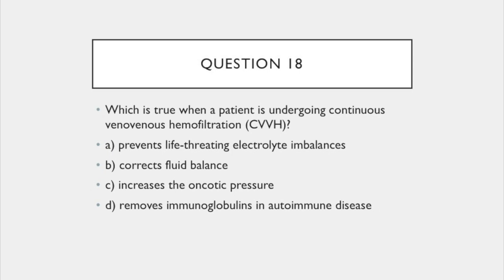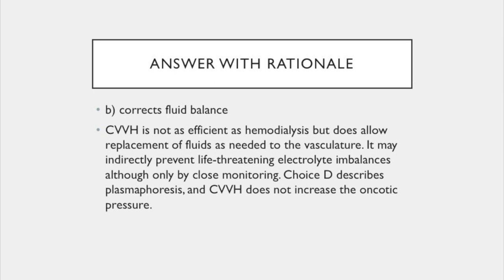Question 18. Which is true when a patient is undergoing continuous veno-venous hemofiltration? A. It prevents life-threatening electrolyte imbalances. B. It corrects fluid balance. C. Increases the oncotic pressure. Or D. Removes immunoglobulins and autoimmune diseases. The answer is B: corrects fluid balance. Continuous veno-venous hemofiltration is not as efficient as hemodialysis, but does allow replacement of fluids as needed to the vasculature. It may indirectly prevent life-threatening electrolyte imbalances, although only by close monitoring. Choice D describes plasmapheresis, and CVVH does not increase oncotic pressure.